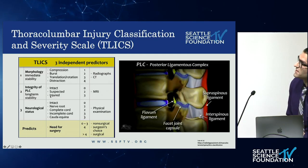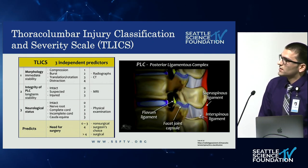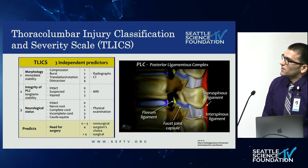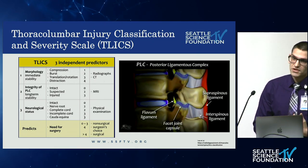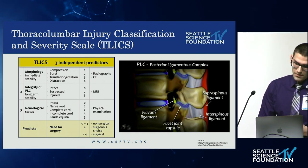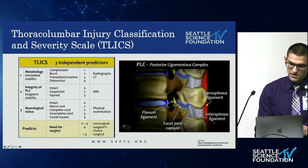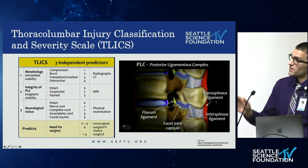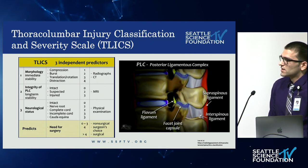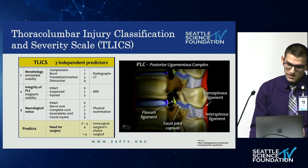Also included is the TLICS score, which helps determine if the patient is a good surgical candidate based on three things: the morphology, the integrity of the posterior ligamentous complex — including the ligamentum flavum, facet joint capsule, interspinous ligament, and supraspinous ligament — and neurologic signs. If you have a score greater than four, surgery can be discussed as an option.